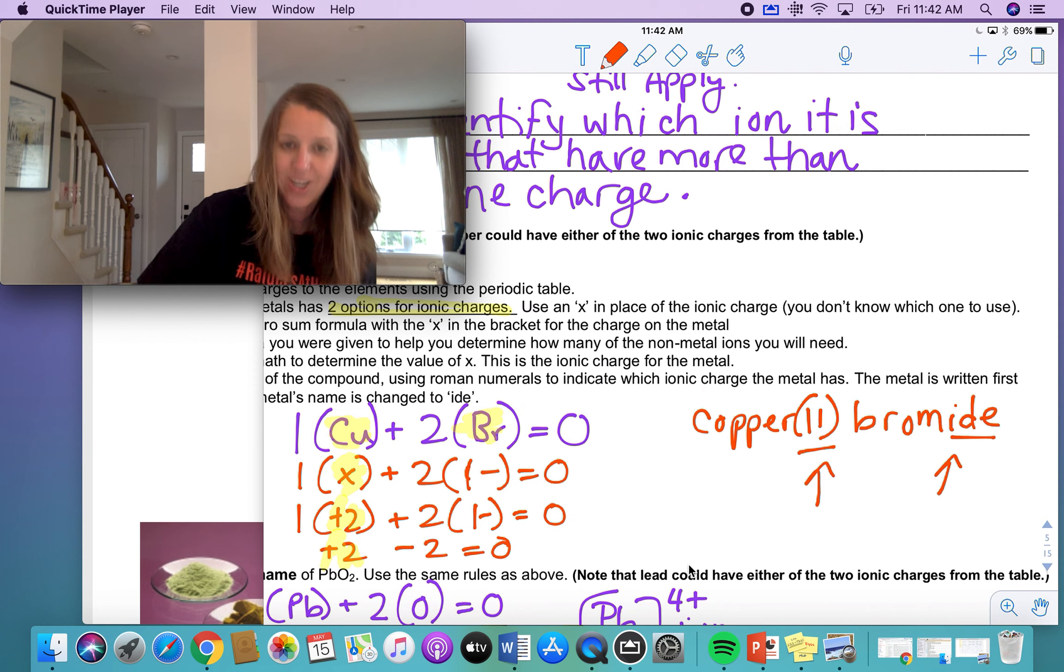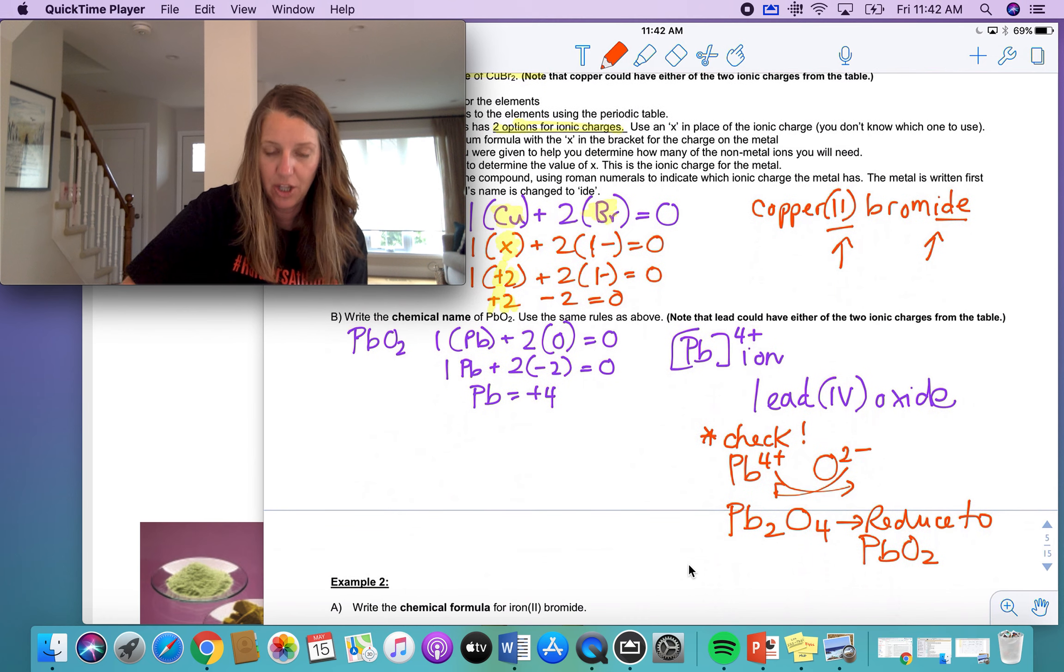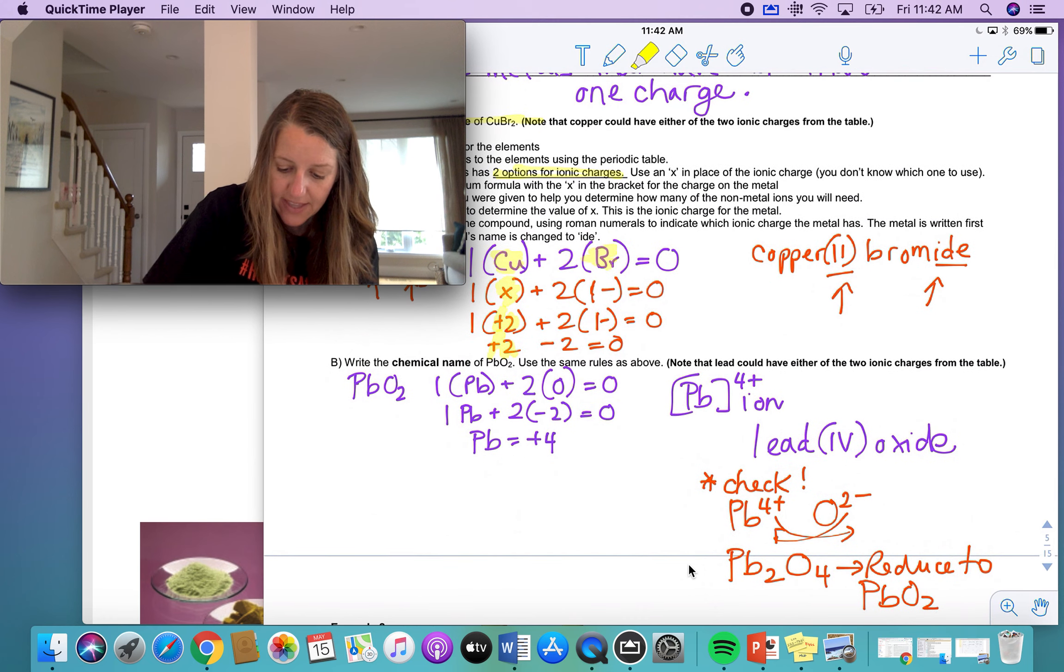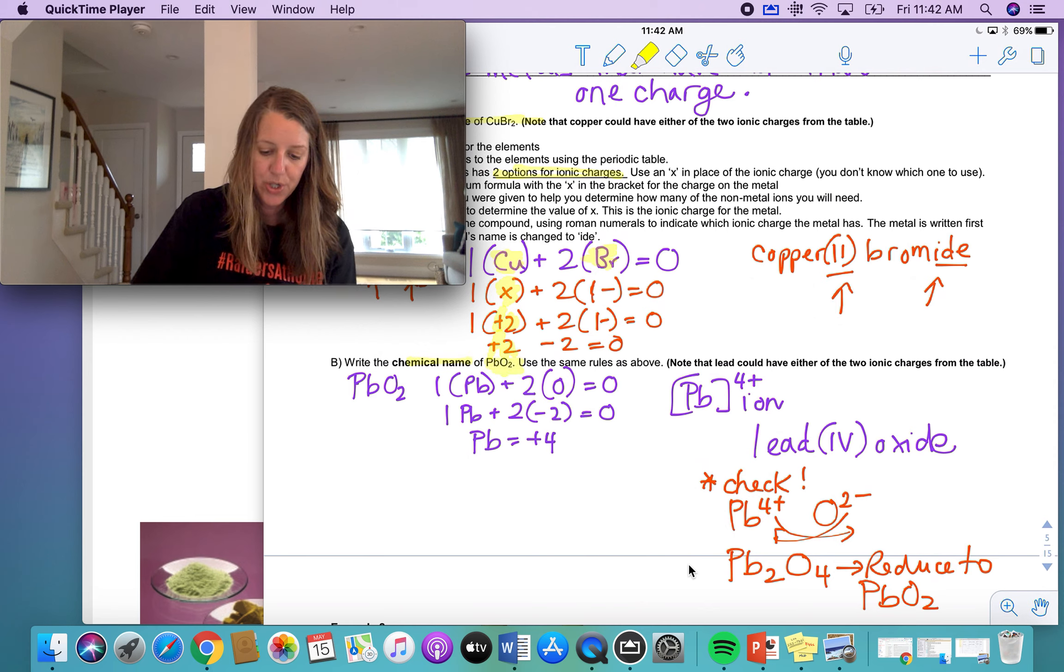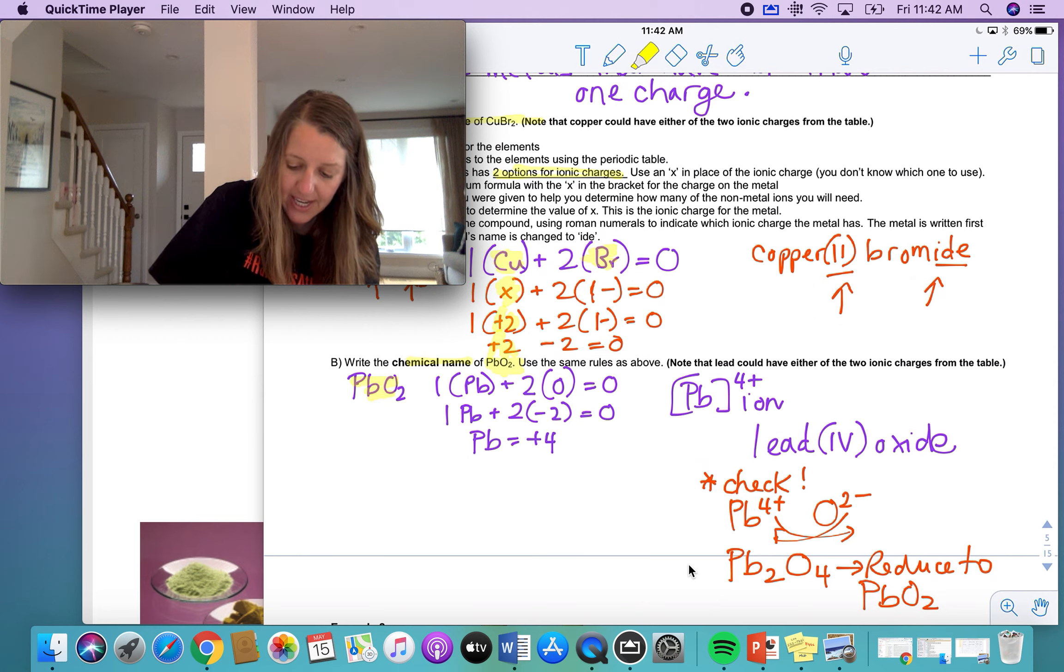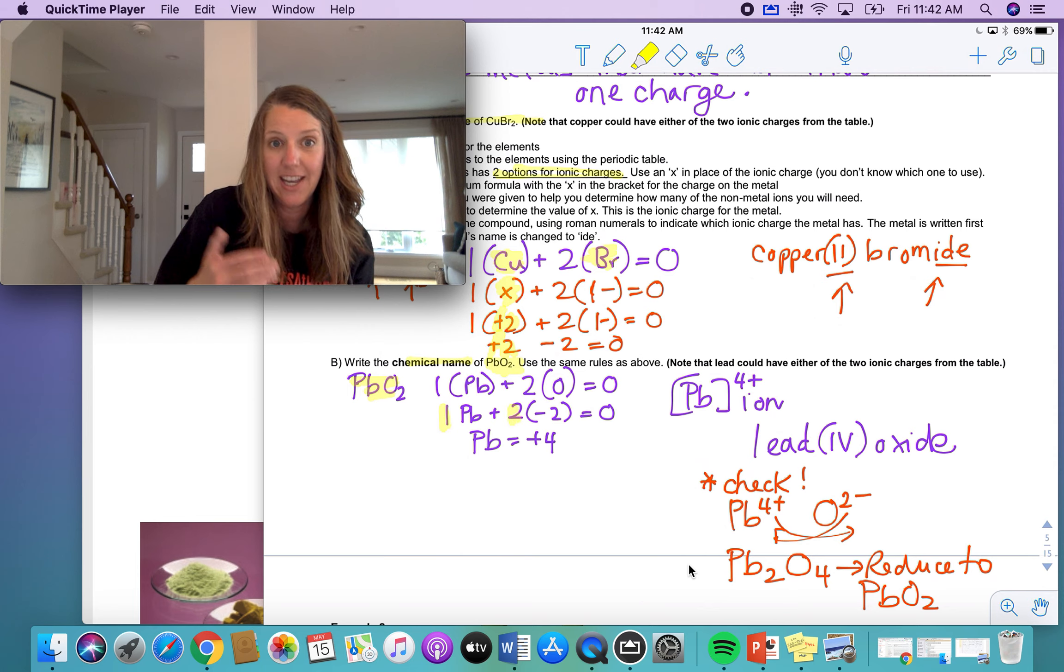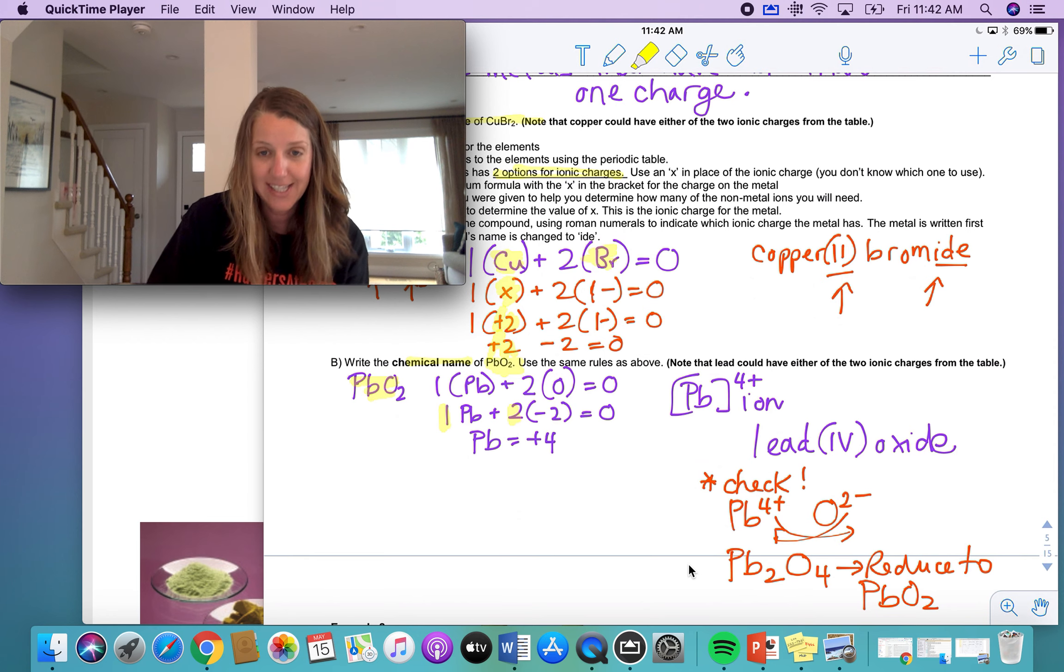Let's look at the next one. I did the answer already here. So it'd be a little quicker. The question says, write the chemical name of PbO2. So I know there's one lead and I know there's two oxygen, one lead, two oxygen. That's what those numbers would be if I were to show my math for this. How do I know that it's lead four? Because if I have two oxygens, each oxygen has a negative two charge. And I have one lead. That lead has to have a charge of plus four.